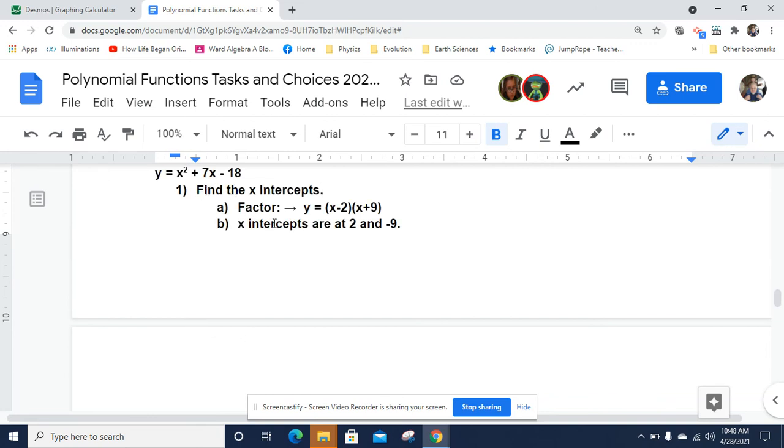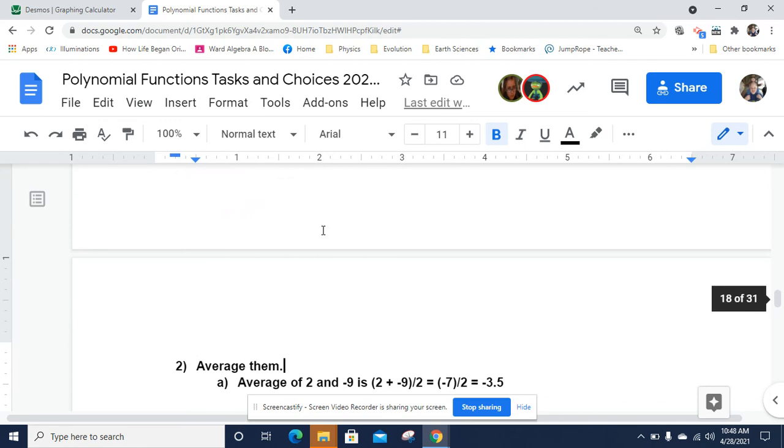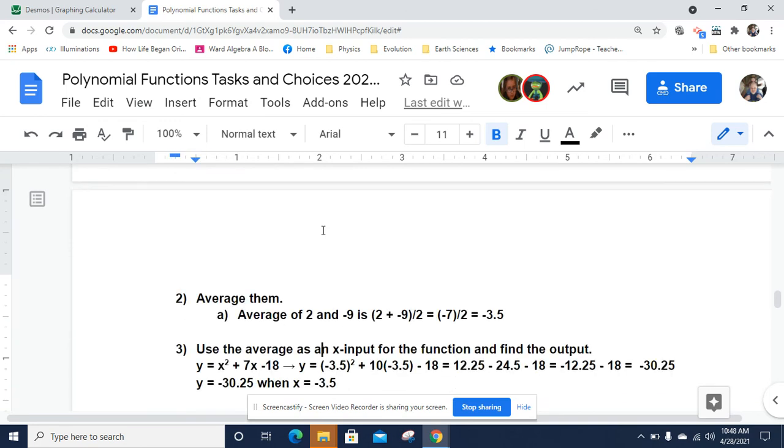So I've got x squared plus 7x minus 18. And so we factor that. Negative 2 times 9 gets me 18. And negative 2 plus 9 gets me 7. So I've got this, x minus 2 times x plus 9. And the x-intercepts are at 2 and negative 9. And so then I get the average of 2 and negative 9. 2 plus negative 9 is negative 7. Divide that by 2 equals negative 3.5.